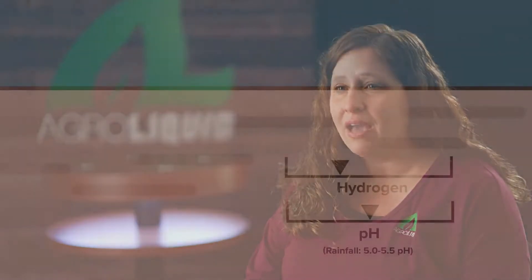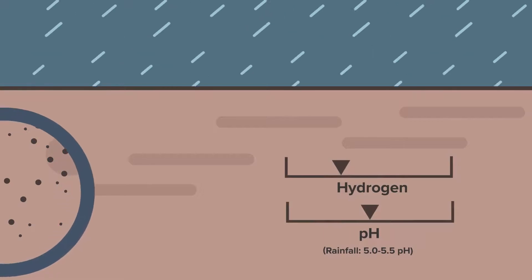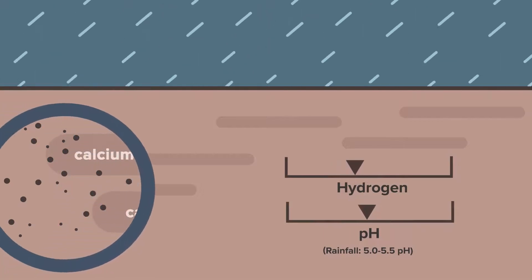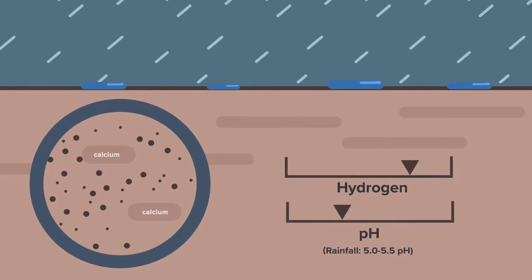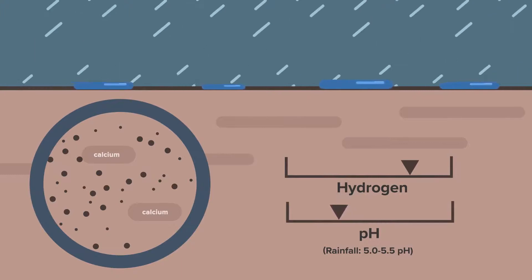pH varies across the United States, and a lot of that has to do with the geography that you're in. In areas with high rainfall, those pHs naturally tend to be on the lower side, more acidic. Rainfall adds additional oxygen and hydrogen into the soil, and with chemical reactions, that provides more hydrogen into that soil solution. The more hydrogen that you have, the lower that soil pH is going to be.